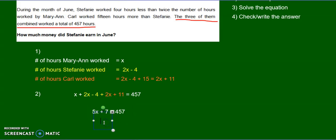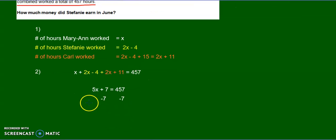And now what do I do? I subtract 7 on both sides. I'll take away 7 over here. Take away 7 over here. And that gives me my new equation.